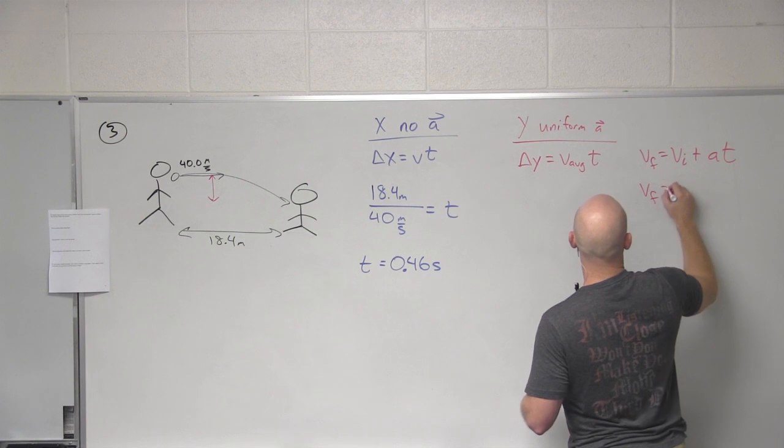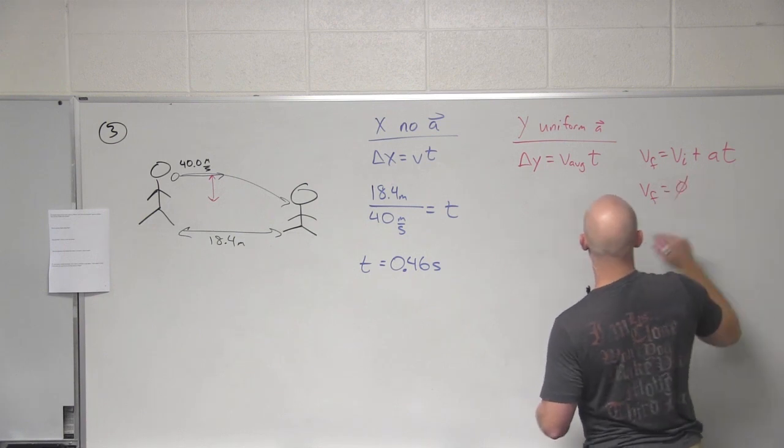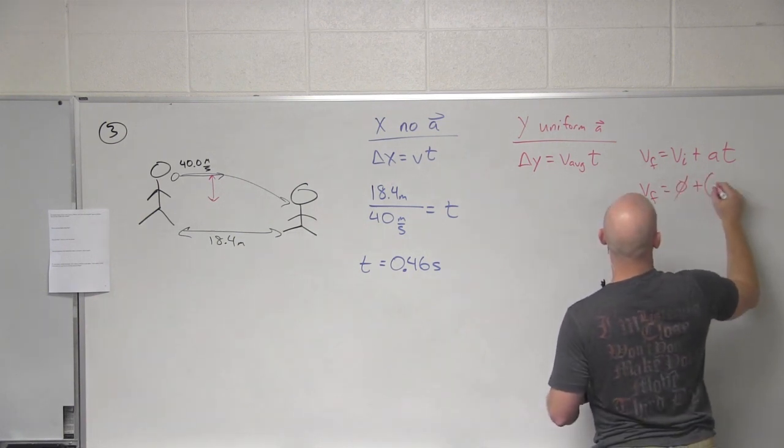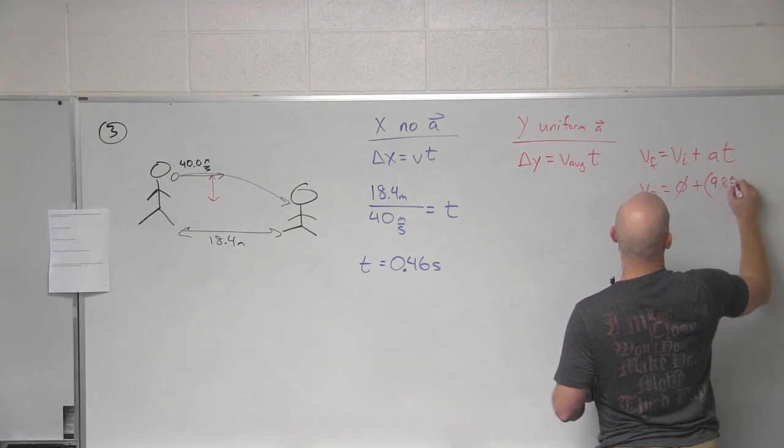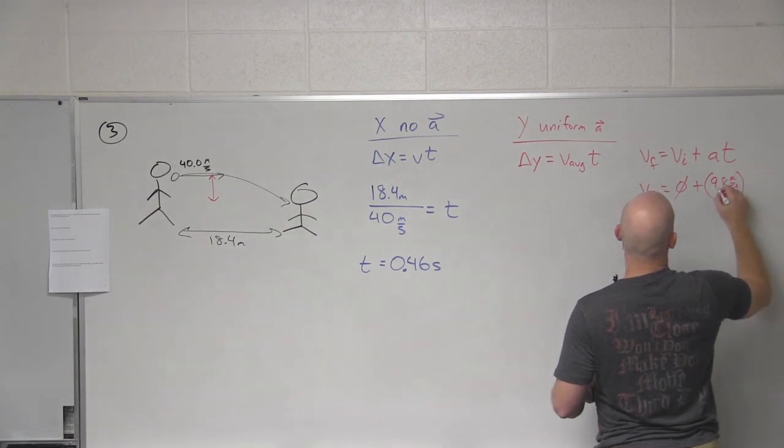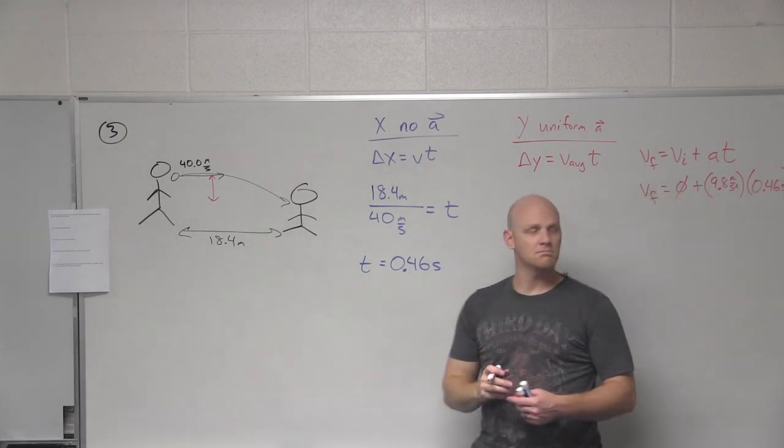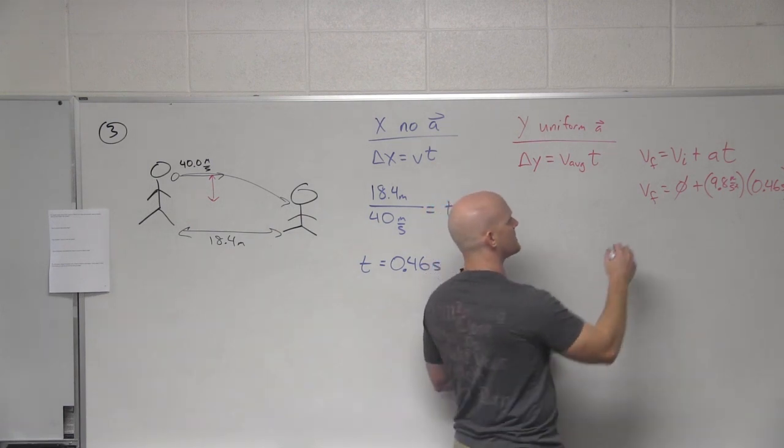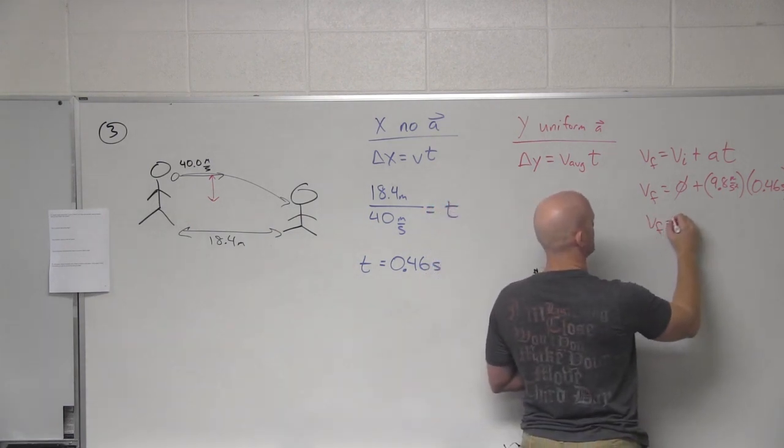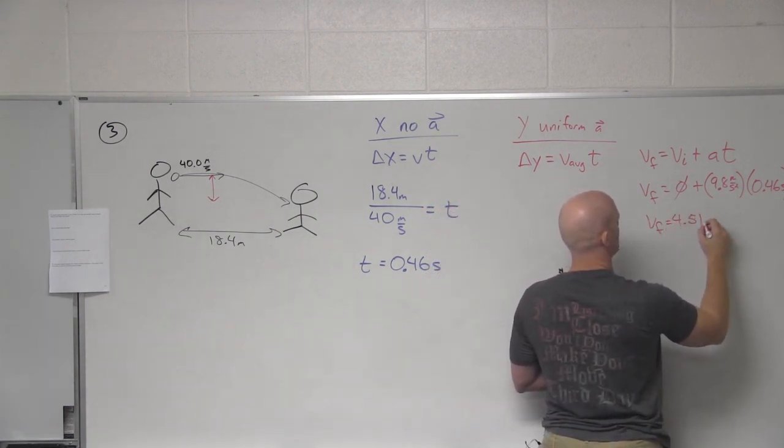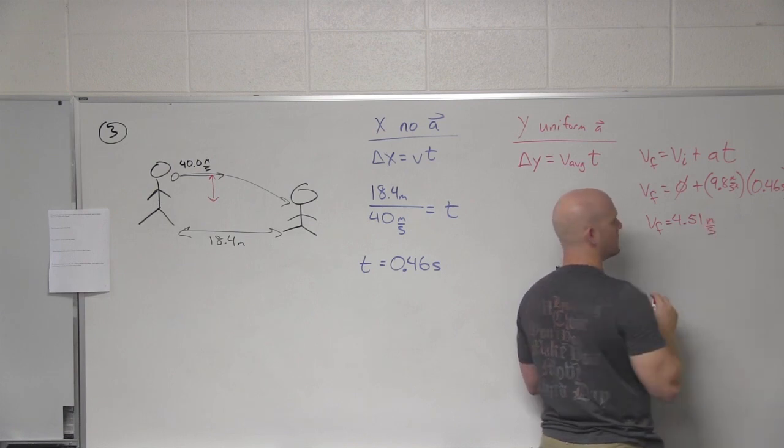So in this case, we can say that v final equals v initial plus at. So your final velocity equals, well, in your y direction, no initial velocity. Acceleration due to gravity is 9.8 meters per second squared. And then time of 0.46 seconds. Great. And what does that get us for a final velocity?